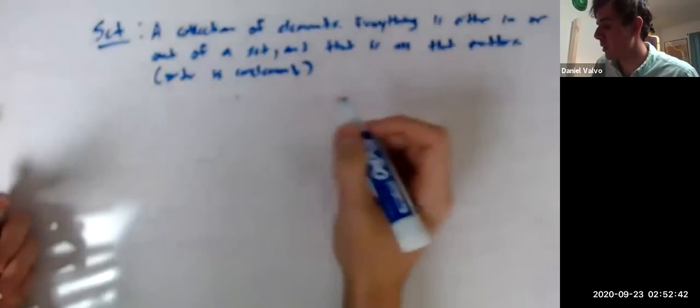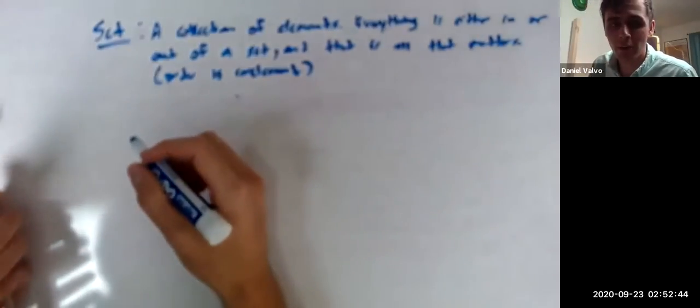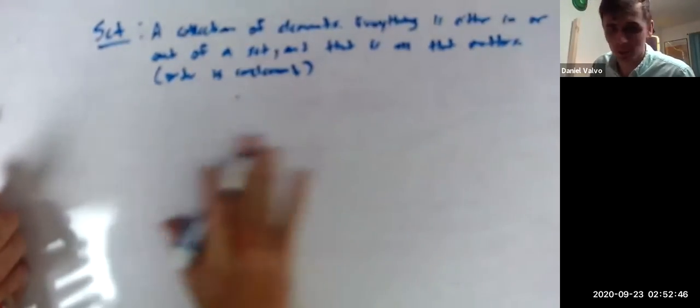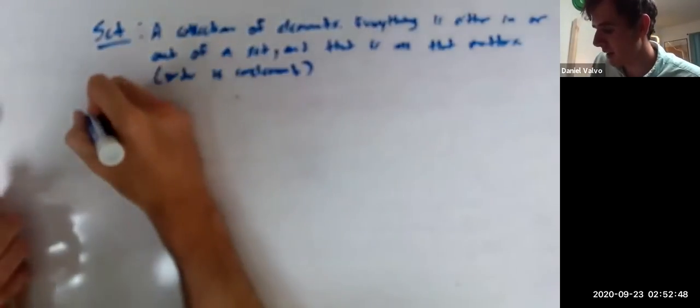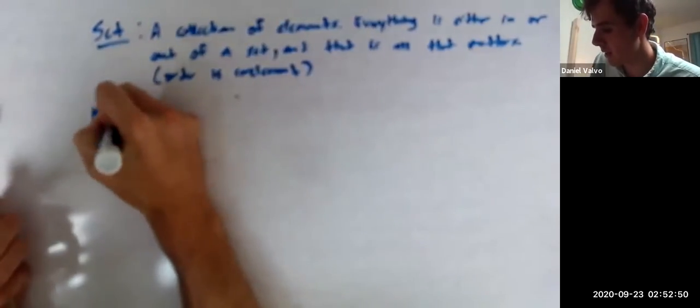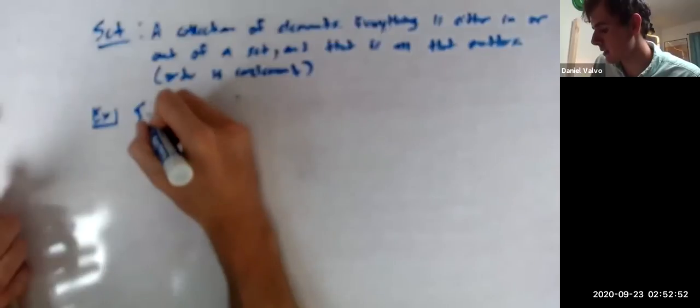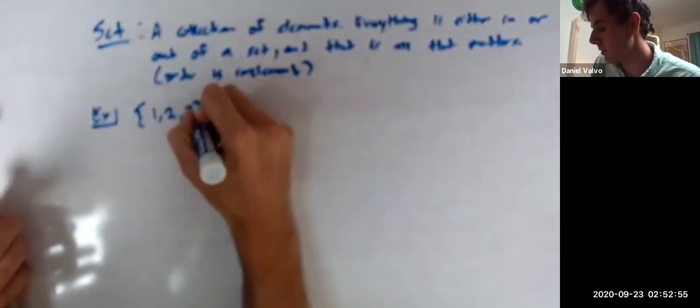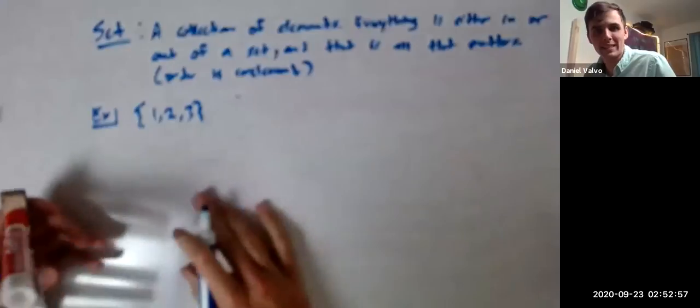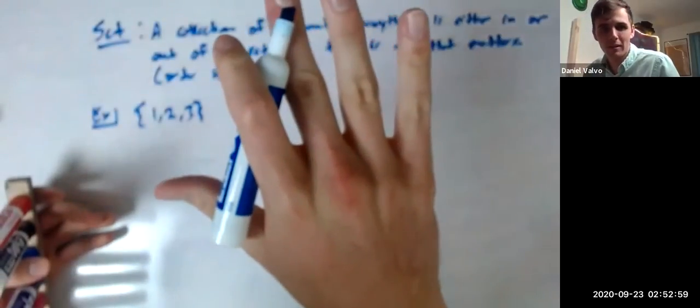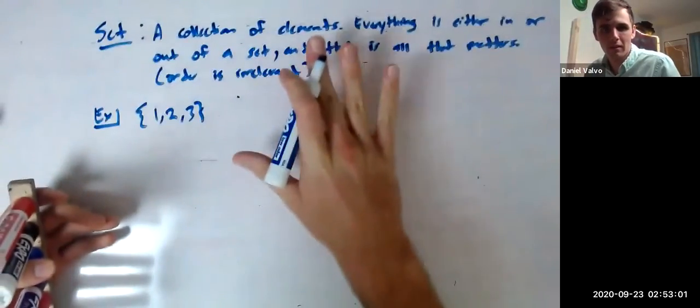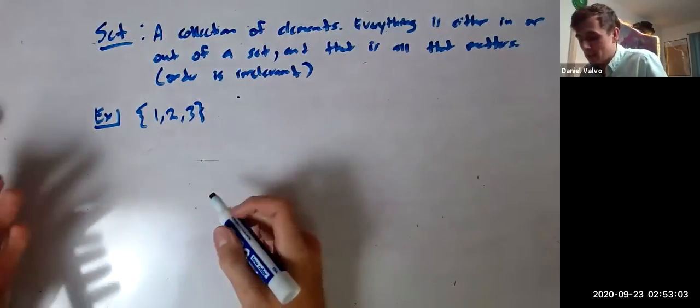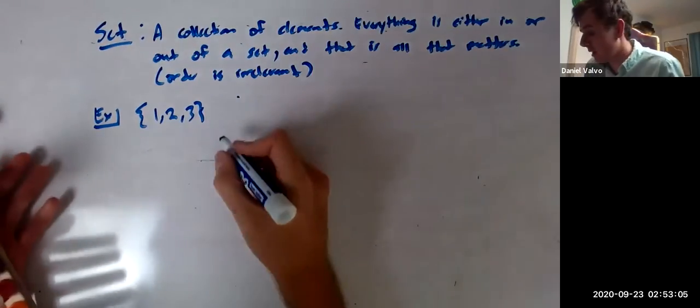But yeah, so sets are always denoted with curly brackets. This will help. This will come back. So an example of a set is {1, 2, 3}. All right, that's a set that just contains the elements. Got it. It just contains the elements 1, 2, and 3, right?